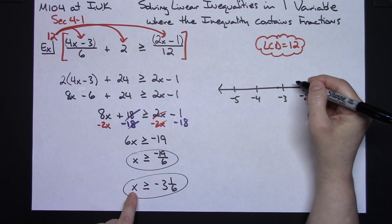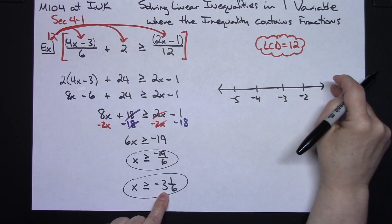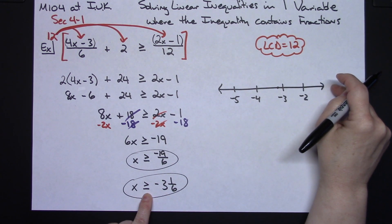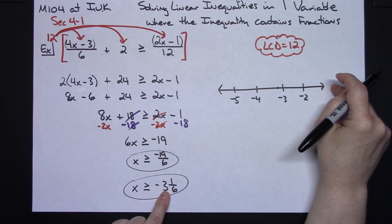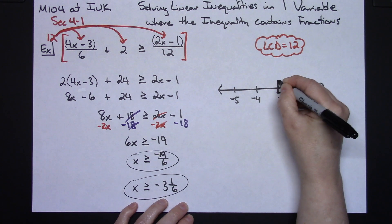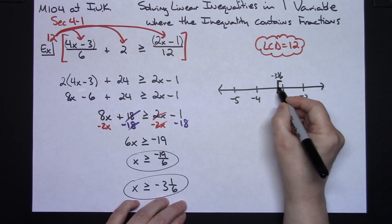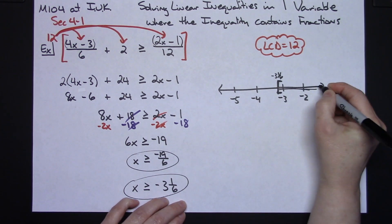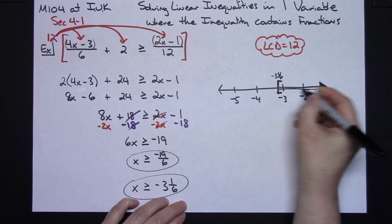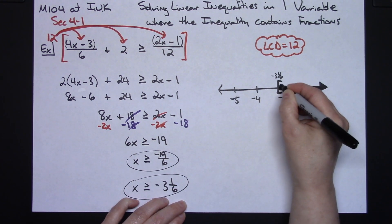It says x is greater than or equal to. So the numbers that are greater are going to be to the right. The equal to part means I want to include negative 3 and 1/6. So I'm going to do the square bracket. So there's my square bracket. I might go ahead and label that negative 3 and 1/6 there. And then I'm shading everything to the right of that with the square bracket.